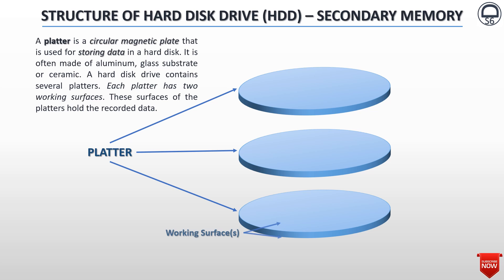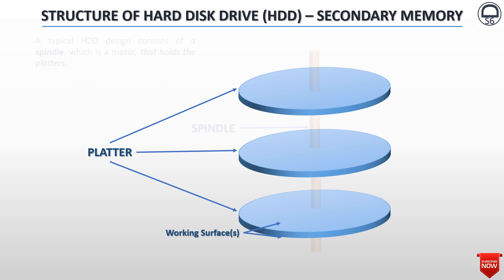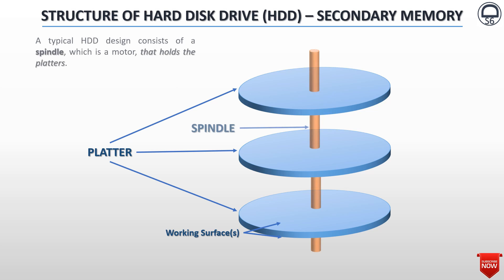Each platter has two working surfaces. These surfaces of the platters hold the recorded data. A typical HDD design consists of a spindle motor that holds flat circular platters. The spindle motor plays an important role in hard drive operation by turning the hard disk platters. It must provide stable, reliable, and consistent turning power for many hours of continuous use. Many hard drive failures occur due to the spindle motor not functioning properly.